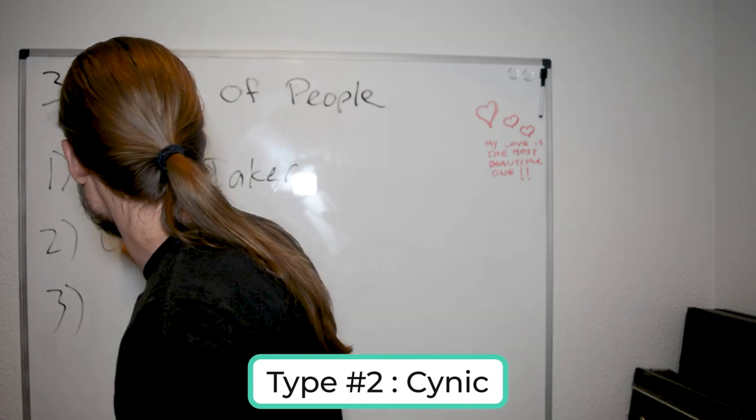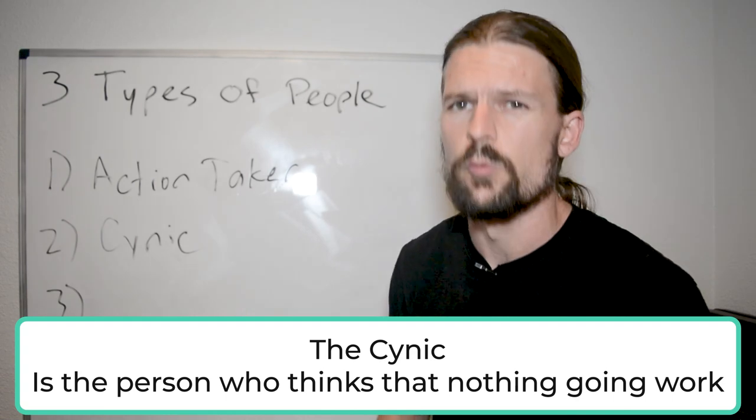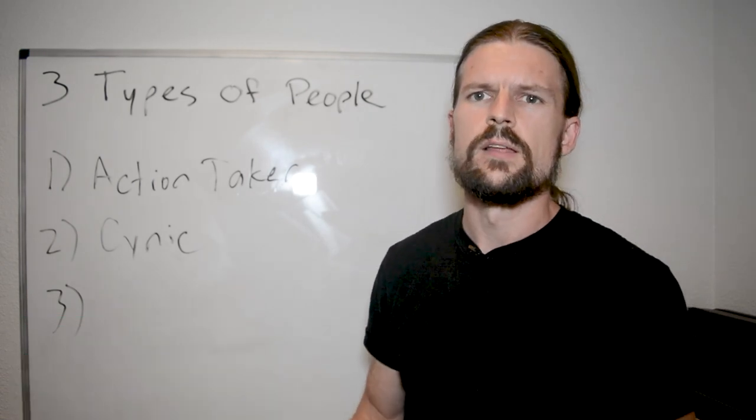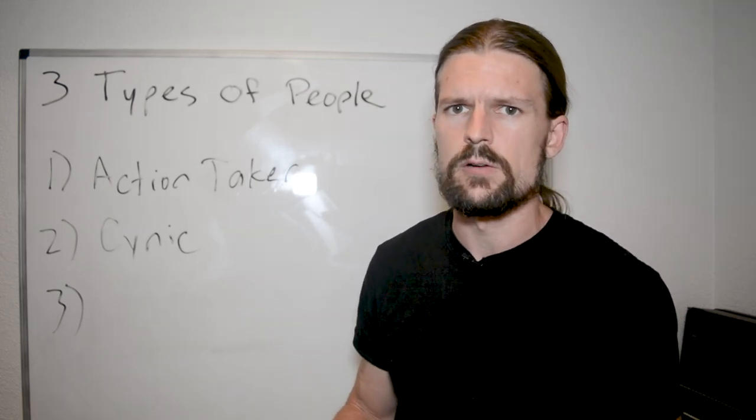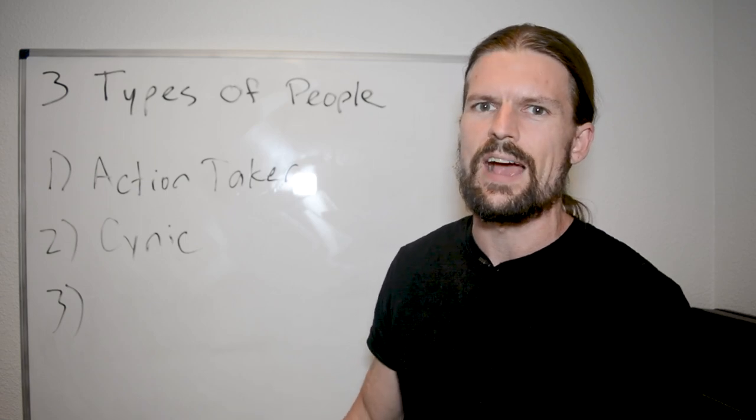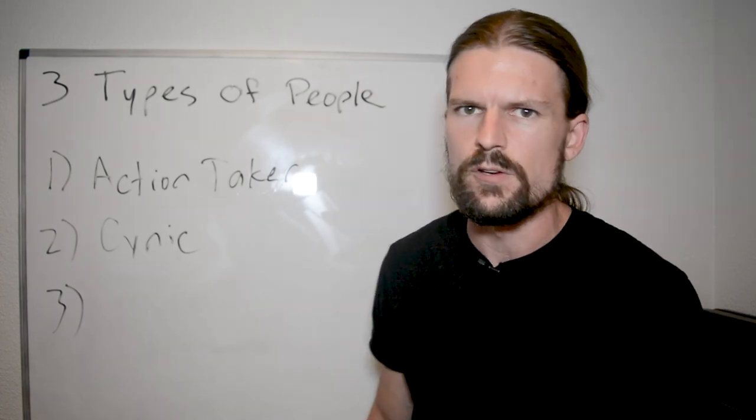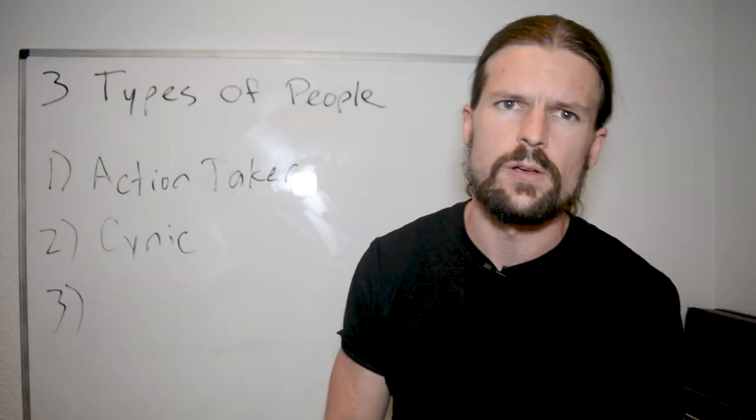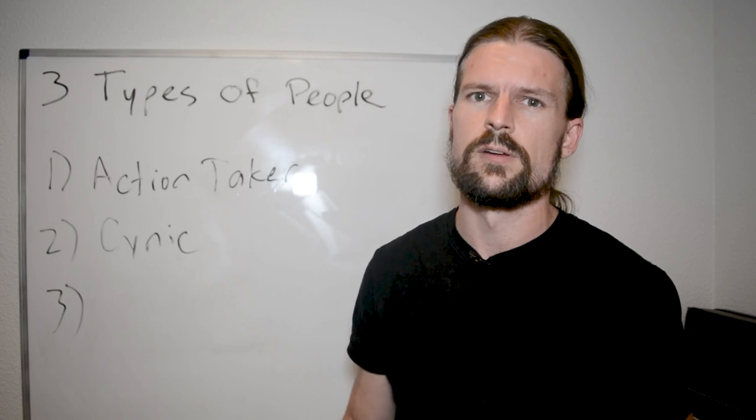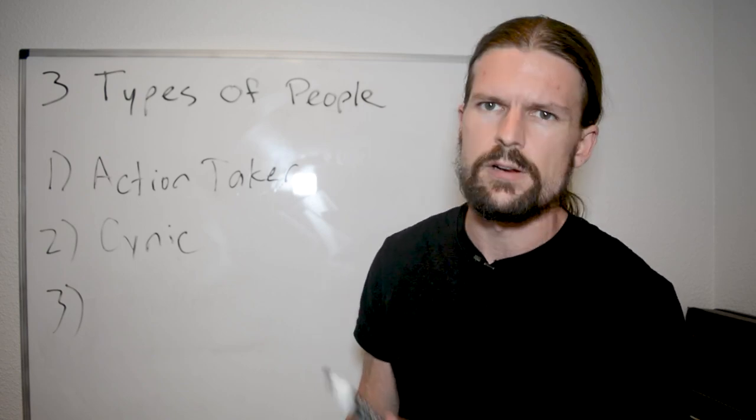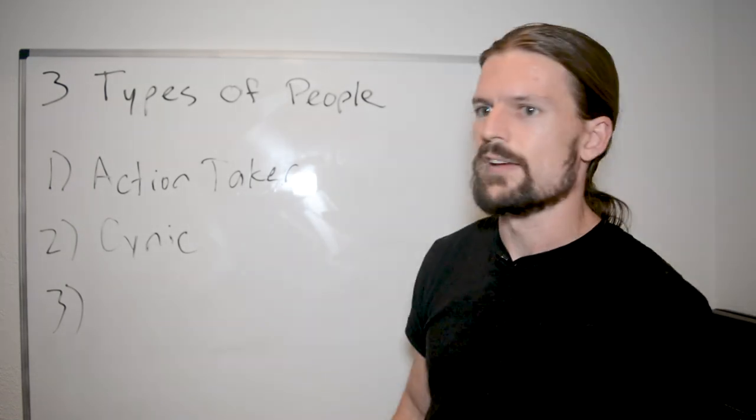The second type of person is the cynic. The cynic is the person who thinks that nothing is going to work, that no opportunity is legitimate, that everything is a scam, and whatever crappy life circumstances he happens to have right now are going to be the same life circumstances that he's going to have for the rest of his life, and there's no possible way to get out. You know these people. They're the ones that if you say that you want to do something, or if you want to learn something, or you want to get into a new career, start a new business, they give you all the reasons that it's never going to work, and tell you why the world isn't fair, and why they're a victim, and probably why you're a victim too. So that's the second type of person, is the cynic.